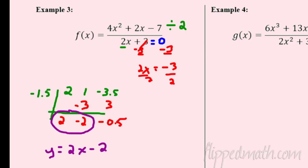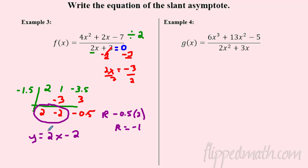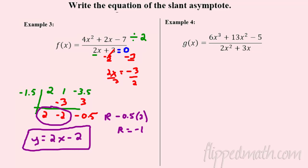We're only finding the slant asymptote, so I don't care about the remainder. But just a note: if you did need the remainder, you'd have to multiply -0.5 by 2 to undo the earlier division, giving a remainder of -1. Synthetic division or long division — your choice.